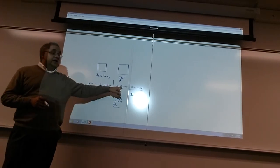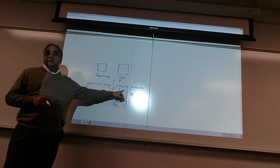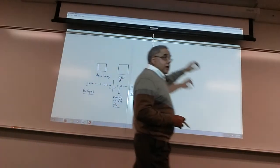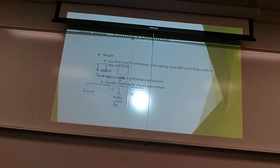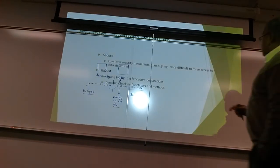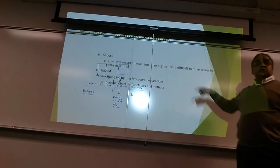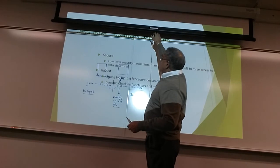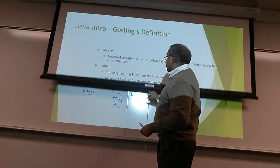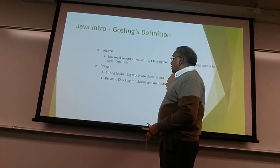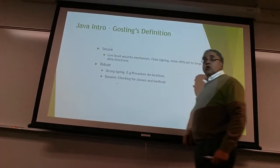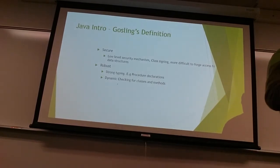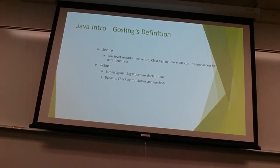Changes in the class file cannot be made — that's what this slide is about. Class signing makes it difficult to forge the data structures of the language. This is also considered a robust language. There is strong typing — for example, I cannot assign a float value to an integer, like I can in C++.